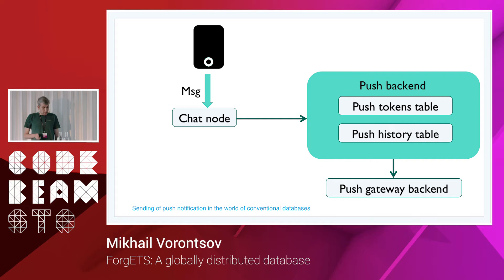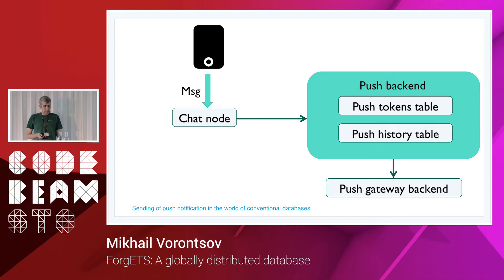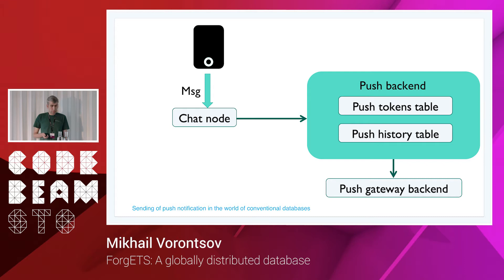Now let's assume the same situation but with an embedded database. Instead of making all these round trips, we make just one cast to the push backend, which conveniently hosts both the push token table and push history table — so we access both items locally, make a decision based on that, and if the decision is to send the push notification, we send another cast to the push gateway backend. The difference is that here we make just two one-way trips over the network, versus six in the previous example. Also, the chat node no longer needs to orchestrate all this logic, so we need fewer and less complex chat nodes.